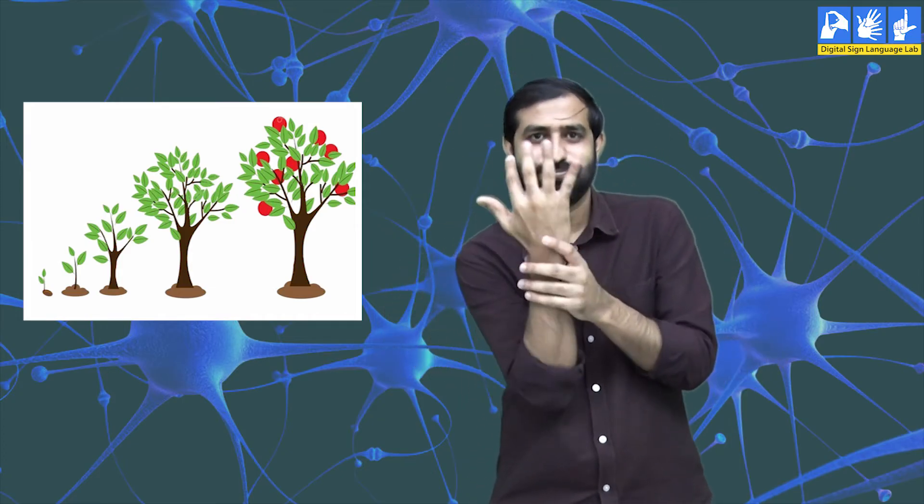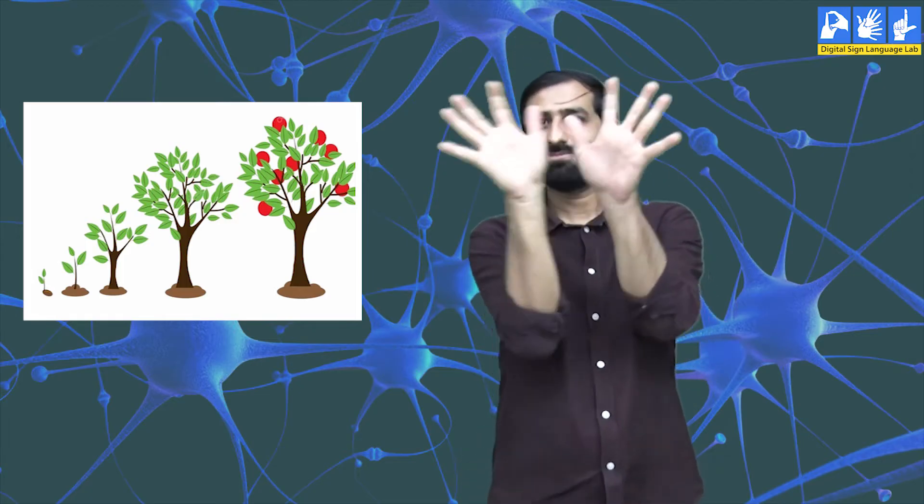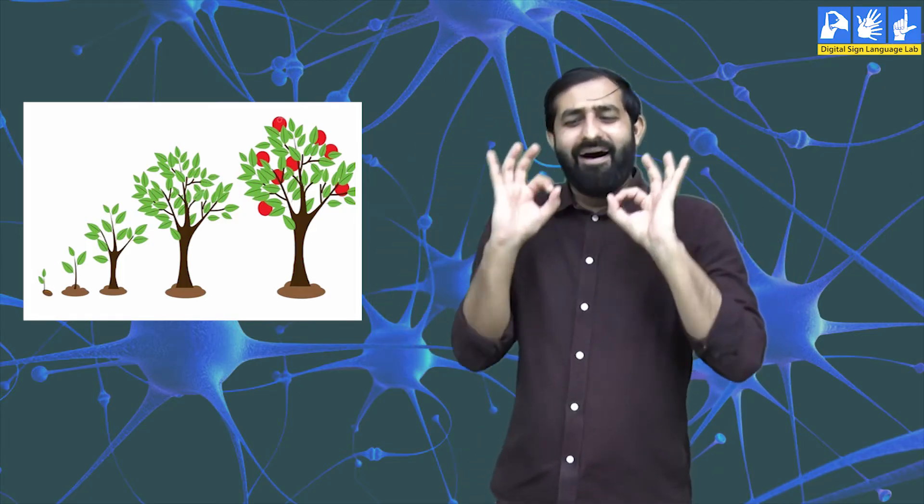The seed develops small roots and these grow out of the seed. Slowly, this grows out of the soil upwards as a plant. We have many examples of this.